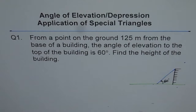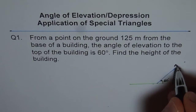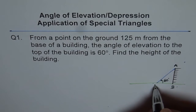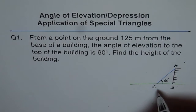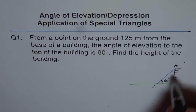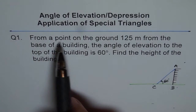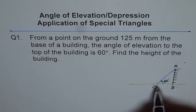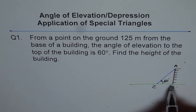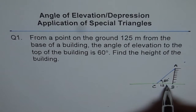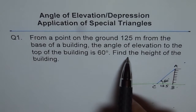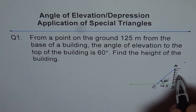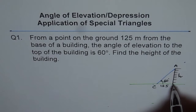The building is labeled AB and the observation point is C. The angle at C is 60 degrees as shown in the figure. The distance CB — from the point to the base of the building — is 125 meters, and the height of the building is h, which we need to find.